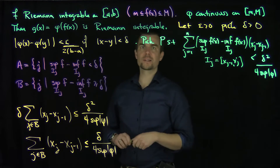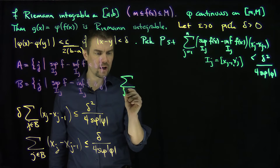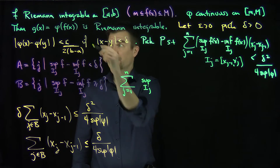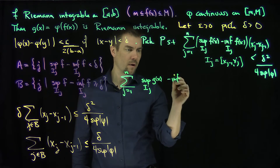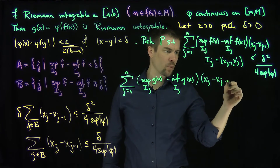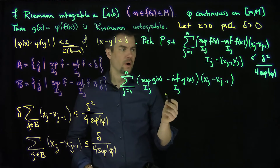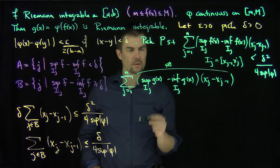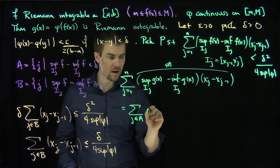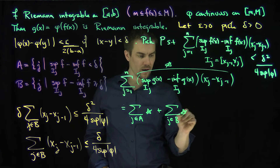Now I'd like to estimate g on this partition. Consider the sum from j=1 to n of (sup of g over I_j minus inf of g over I_j) times (x_j - x_{j-1}). Let's call this expression star. We break it into two sums: I_A is the sum over j in A of star, and I_B is the sum over j in B of star.